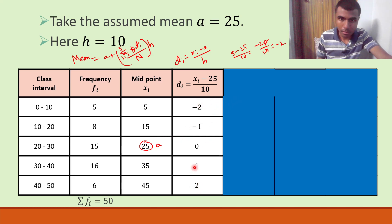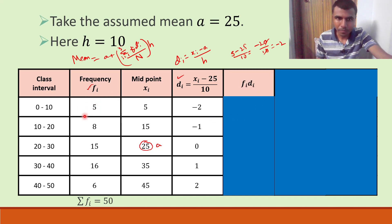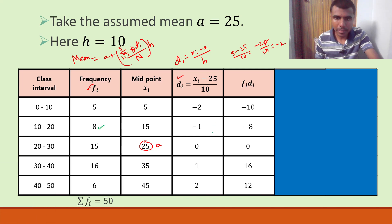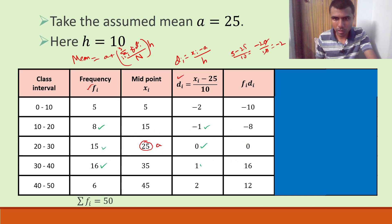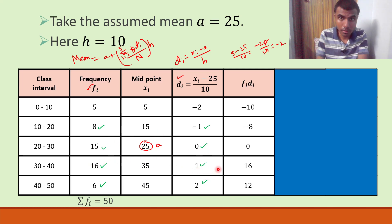Di is done. Next we need fi * di for each row. Multiply the two columns: 5 × (-2) = -10; 8 × (-1) = -8; 15 × 0 = 0; 16 × 1 = 16; 6 × 2 = 12.